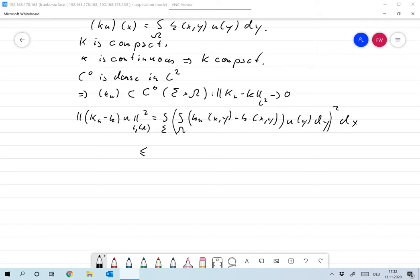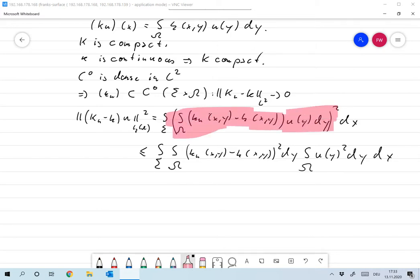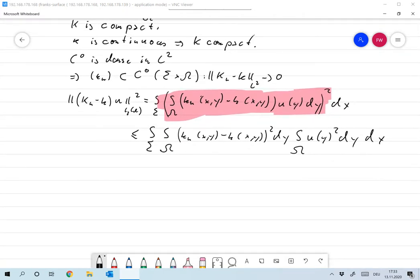Using Cauchy-Schwarz, this is less or equal than the integral over sigma, integral over omega, K_n(x,y) minus K(x,y) squared dy times the integral over omega u(y) squared dy, and everything is dx. And what I've done is I've applied Cauchy-Schwarz to this inner scalar product. Applied Cauchy-Schwarz to this.